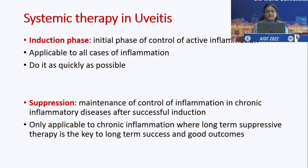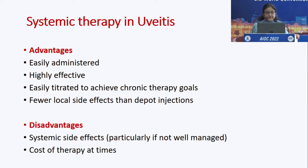Systemic therapy in uveitis has two phases: the induction phase — initial control of active inflammation applicable to all cases — and suppression, only for chronic inflammation where long-term suppressive therapy is key to good outcomes. The advantages of systemic therapy are that it is easily administered, highly effective, easily titrated, and has fewer local side effects than depot injections.